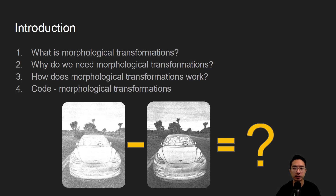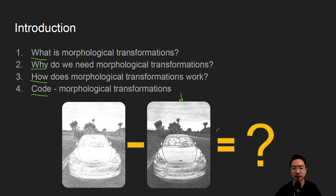In this video we're going to talk about morphological transformations in OpenCV using Python. We'll start off by saying what it is, why do we need it, how does it work, and jump straight into a coding example. By the end of this video, we'll see how we can take this image here on the left, subtract it from this image here on the right, and we'll get some unknown picture that we'll find out what it's going to be.